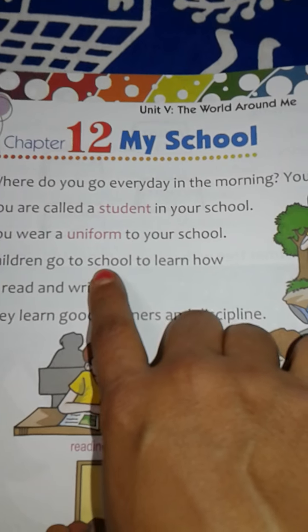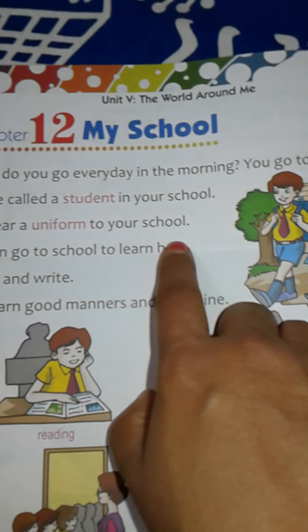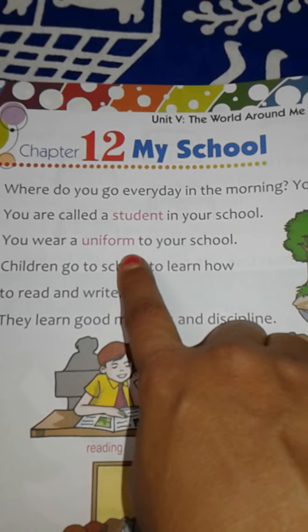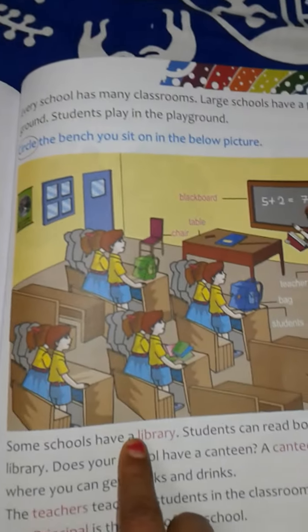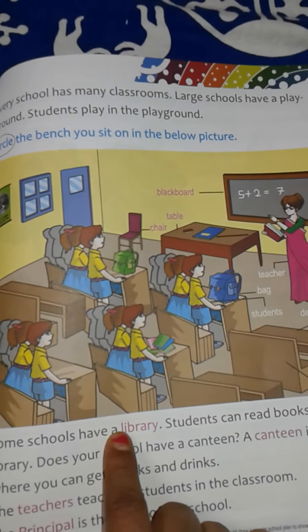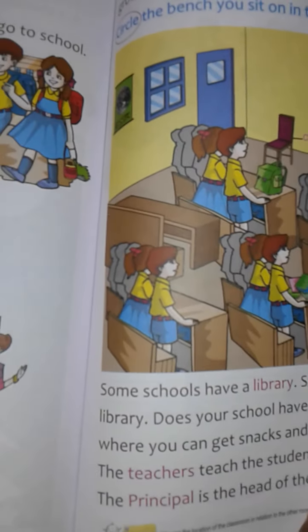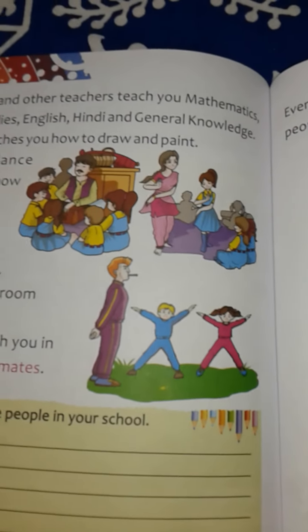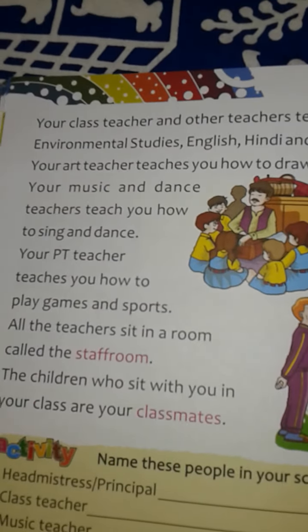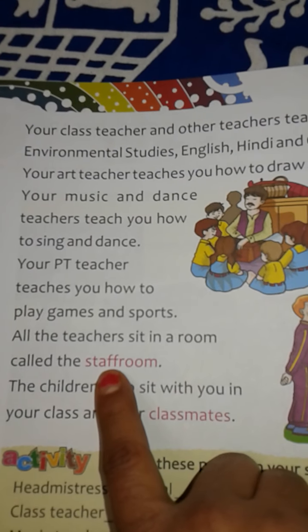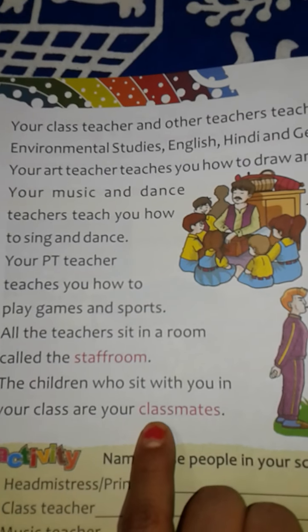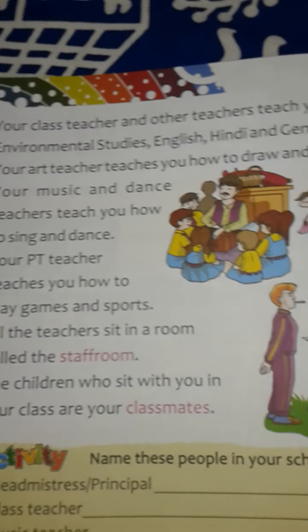This chapter is My School. We know about our school — we are students and we wear a uniform to school. Schools have a library, playground, and canteen. We see teachers, nurse, principal, gardener, peon, and watchman, and there is also a staff room. We meet our classmates, and there is also a PT teacher and dance teacher.